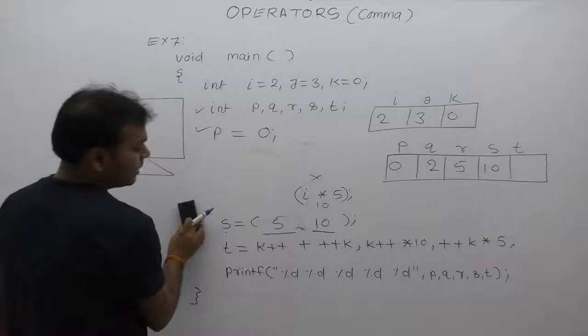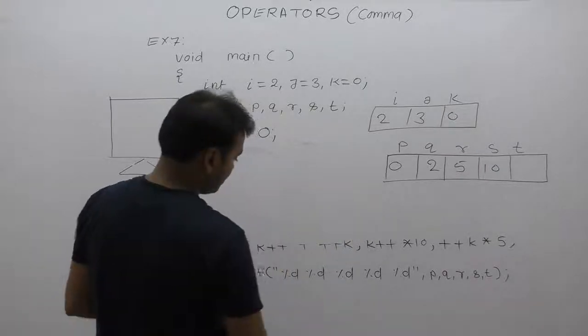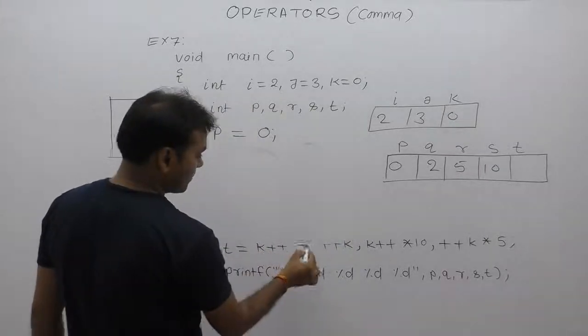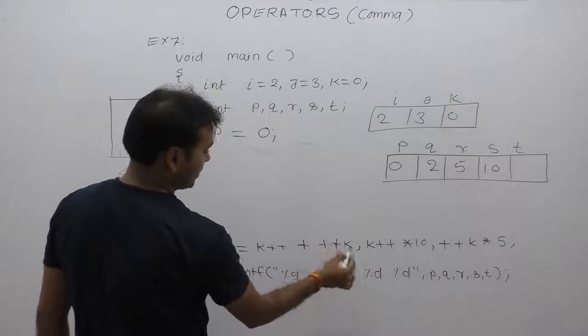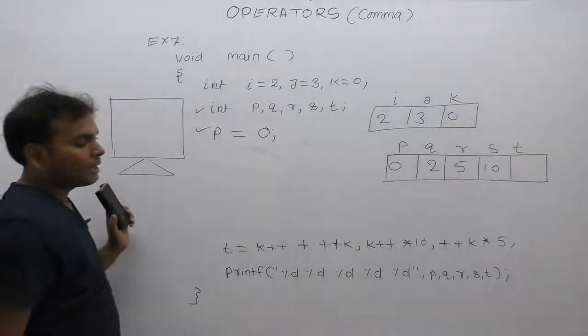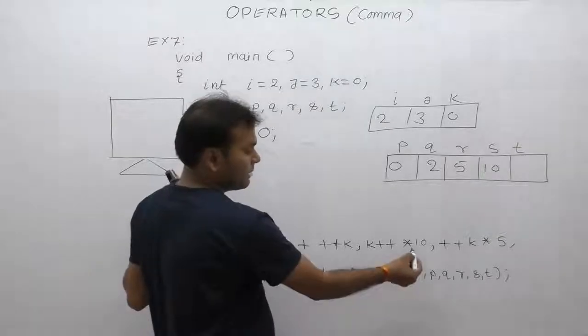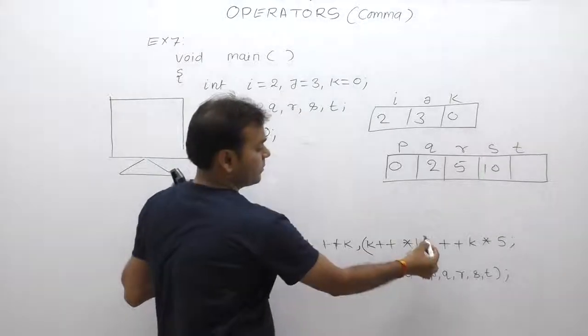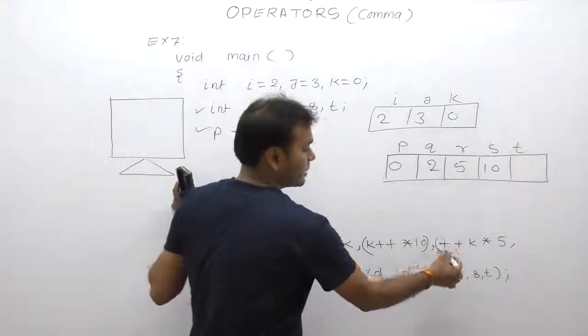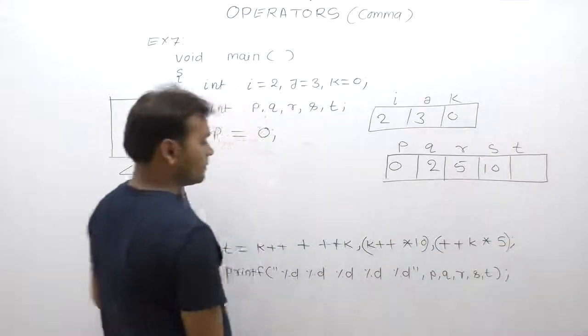Now last expression k plus plus, plus plus plus k, again next one. Applying priority rule, first one multiplication, that one again multiplication, that one next one assignment.